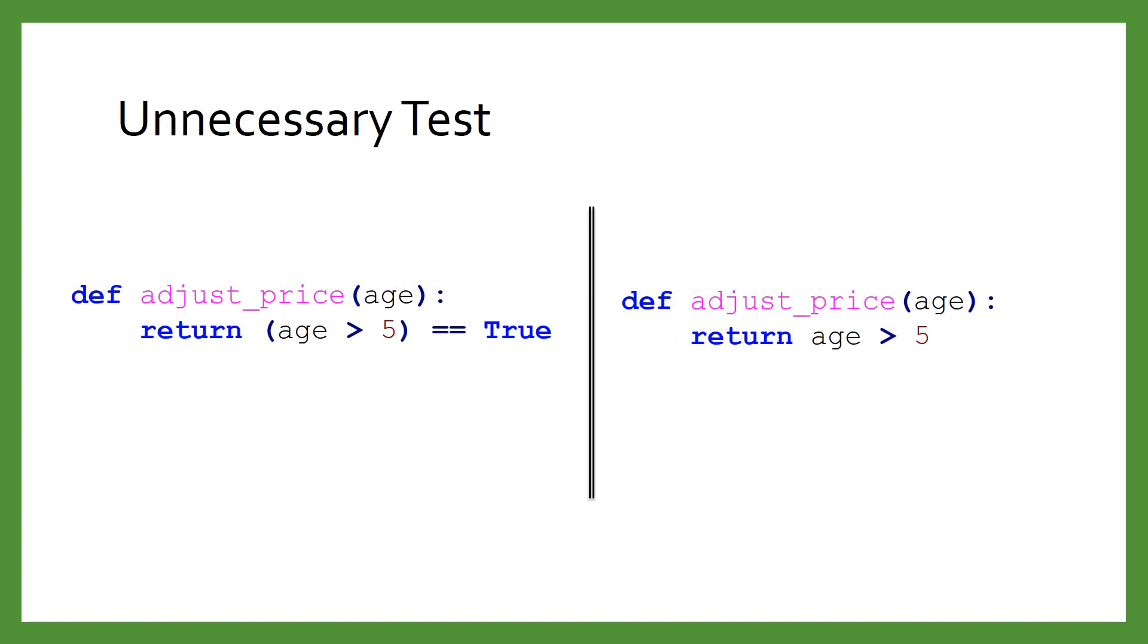A second common mistake is to test if a Boolean expression is equal to true. Although the expression 'age > 5 == True' reads like it makes sense in English, it is redundant in Python.